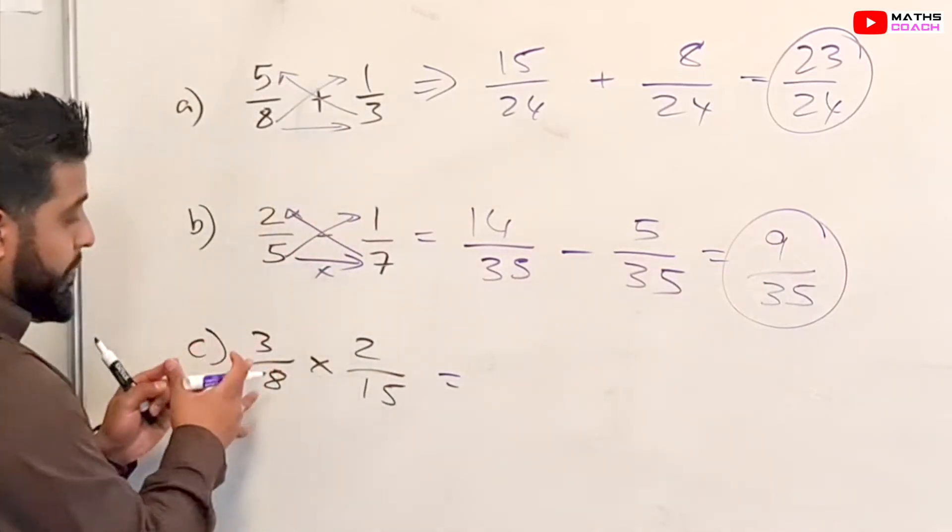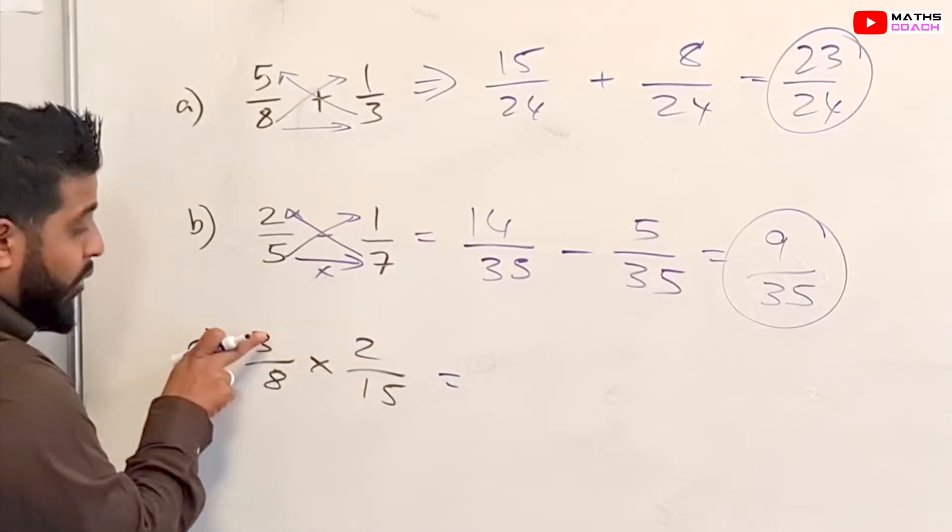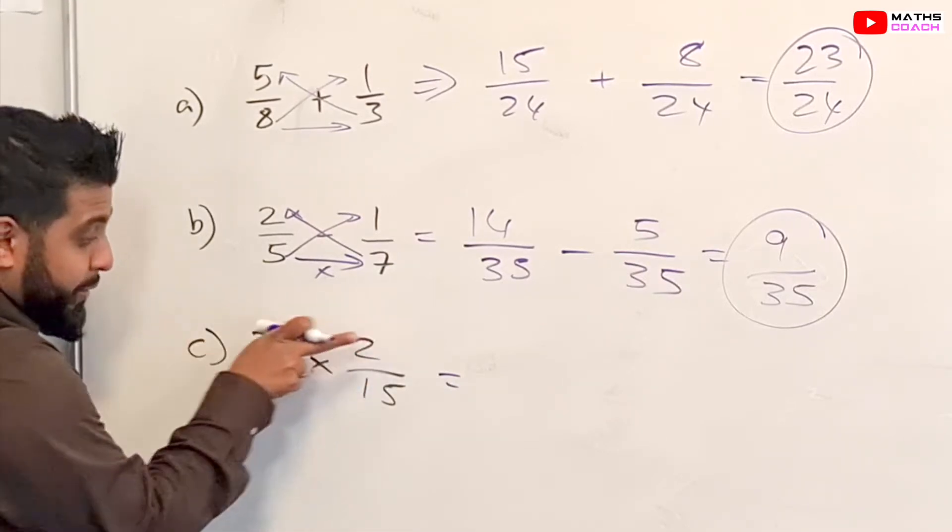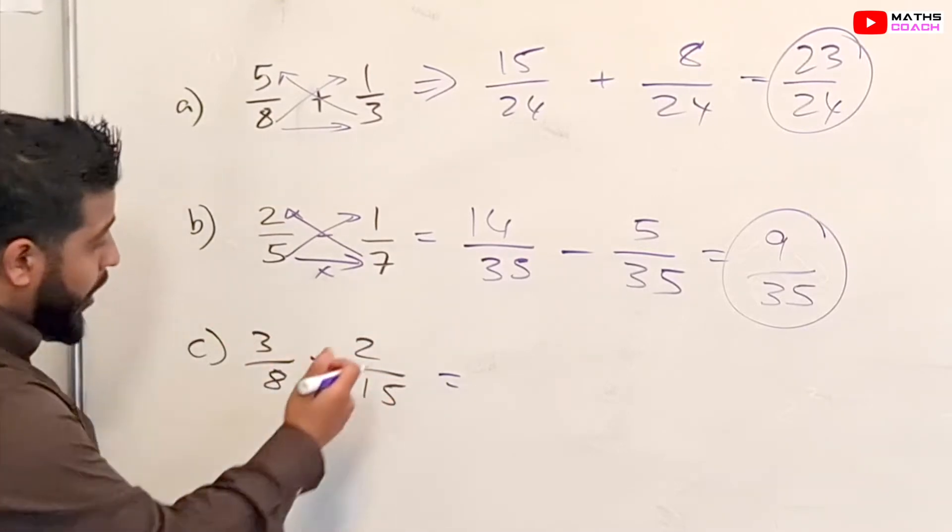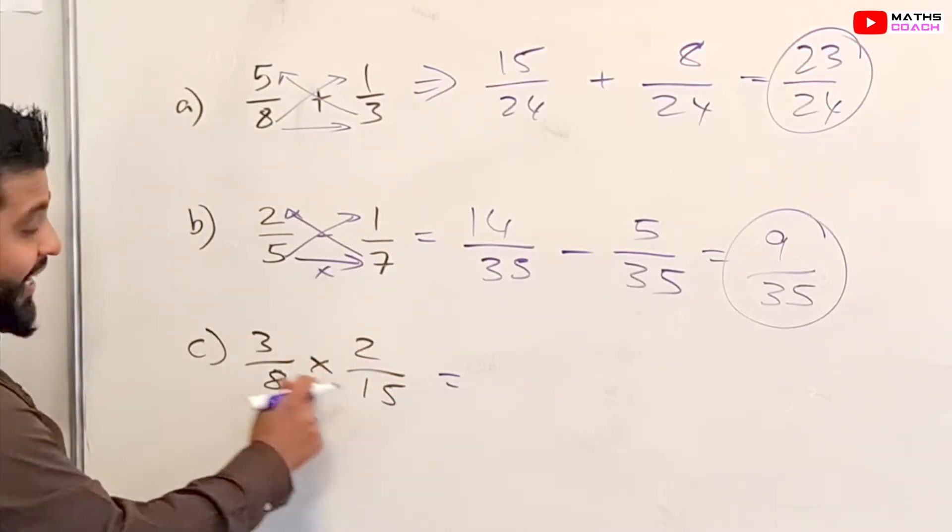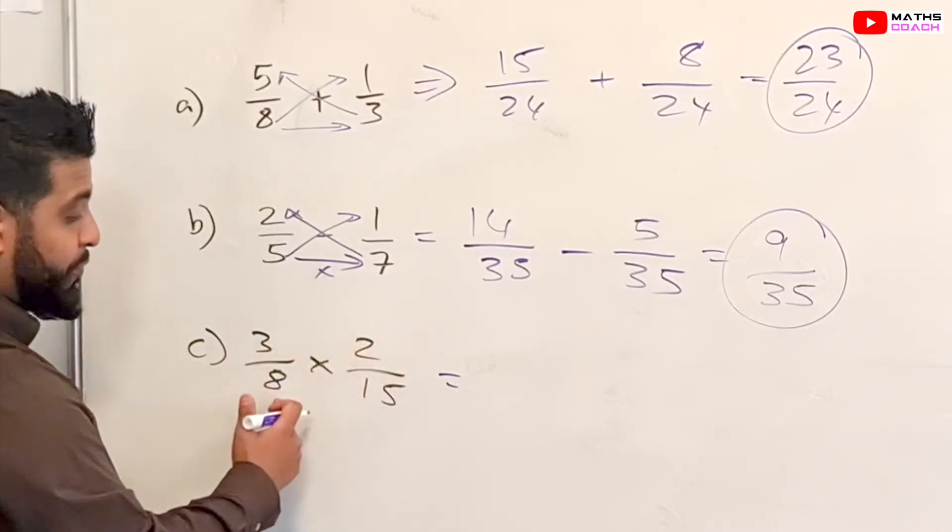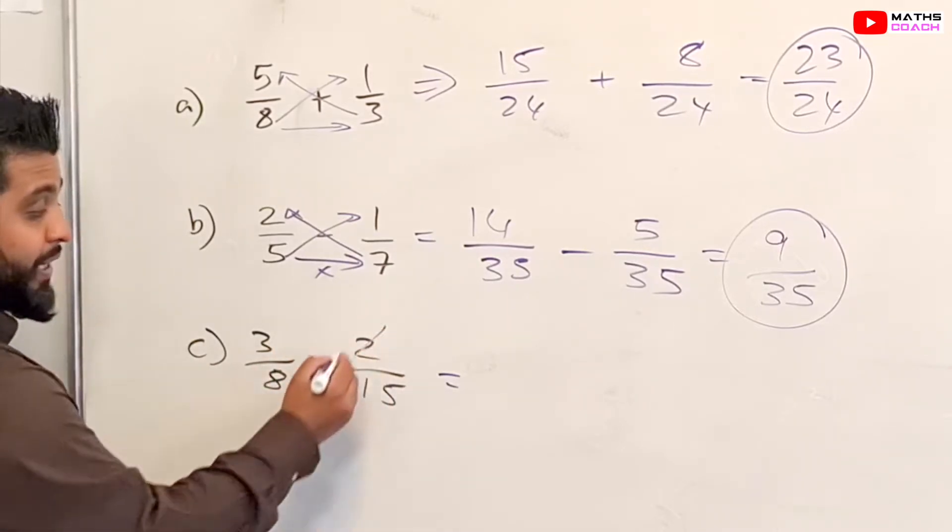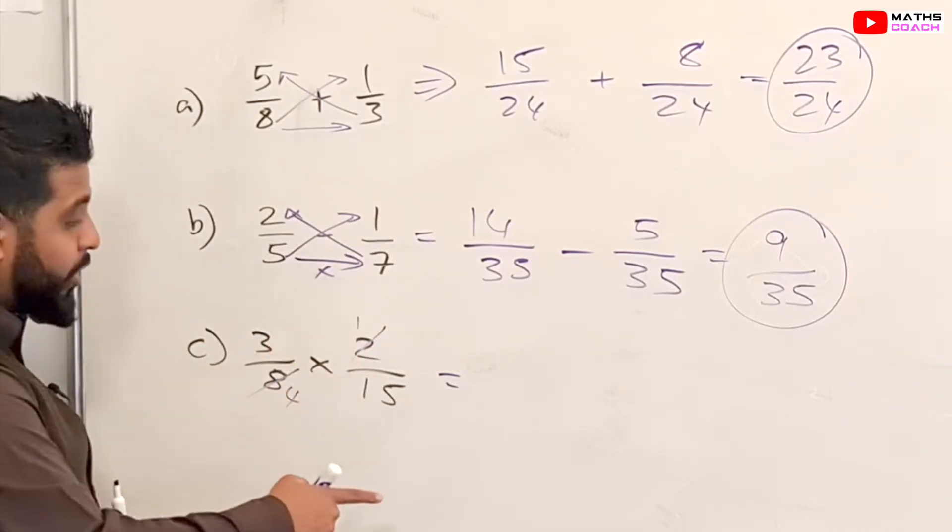When it comes to multiplication we don't need to multiply across and do the cross multiplication. We can do one of two things. We can just multiply the top numerators and the denominators or we can look to cancel diagonally. So see here 2 and 8 they have something in similar. They can both be divided by 2. So 2 divided by 2 is 1, 8 divided by 2 is 4.